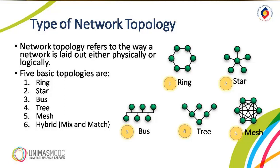The third one is the bus topology. The preceding examples all describe point-to-point connections. A bus topology, on the other hand, is multipoint. One long cable acts as a backbone to link all the devices in a network, as you can see in the figure.